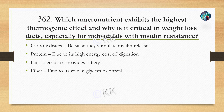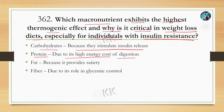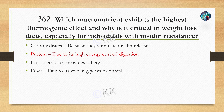Which macronutrient exhibits the highest thermogenic effect, and why is it critical for weight loss diets, especially for individuals with insulin resistance? Option A: Carbohydrate, because they stimulate insulin release. Option B: Protein, due to its high energy cost of digestion. Option C: Fat, because it provides acidity. Option D: Fiber, due to its role in glycemic control. The correct option is option B — protein, due to its high energy cost of digestion.